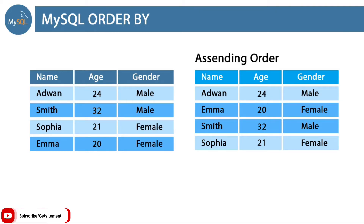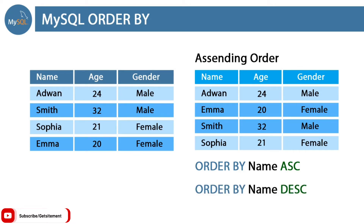To set ascending or descending order, we need to use the special keyword ORDER BY. First you type the ORDER BY keyword, then provide the column name. Then we provide which order we want — we have two types: ascending or descending. For ascending, type ASC; for descending, type DESC. If we set descending, it will start from the opposite direction — from Z.